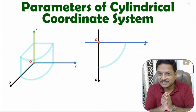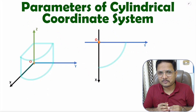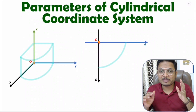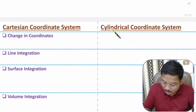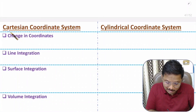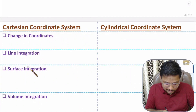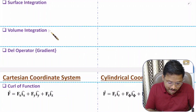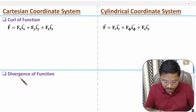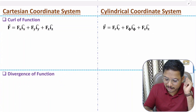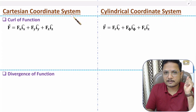Hello friends, welcome to Engineering Funda. In this video I'll discuss the parameters of the cylindrical coordinate system. I'll explain these parameters in comparison with the Cartesian coordinate system, covering: change in coordinates, line integration, surface integration, volume integration, del operator, gradient, curl of function, and divergence of function.